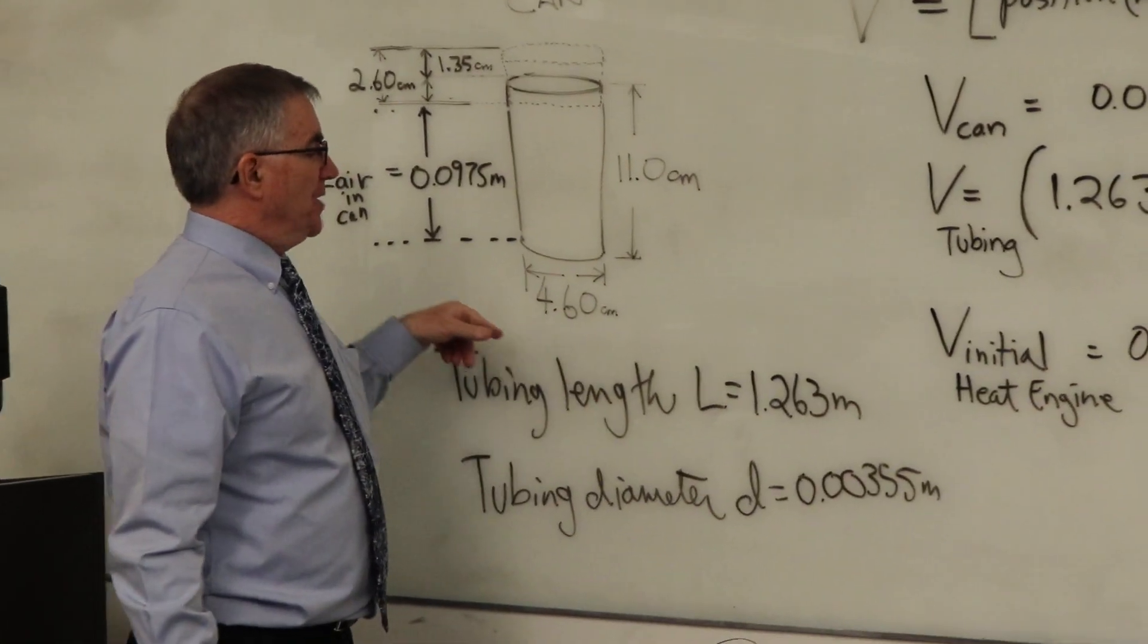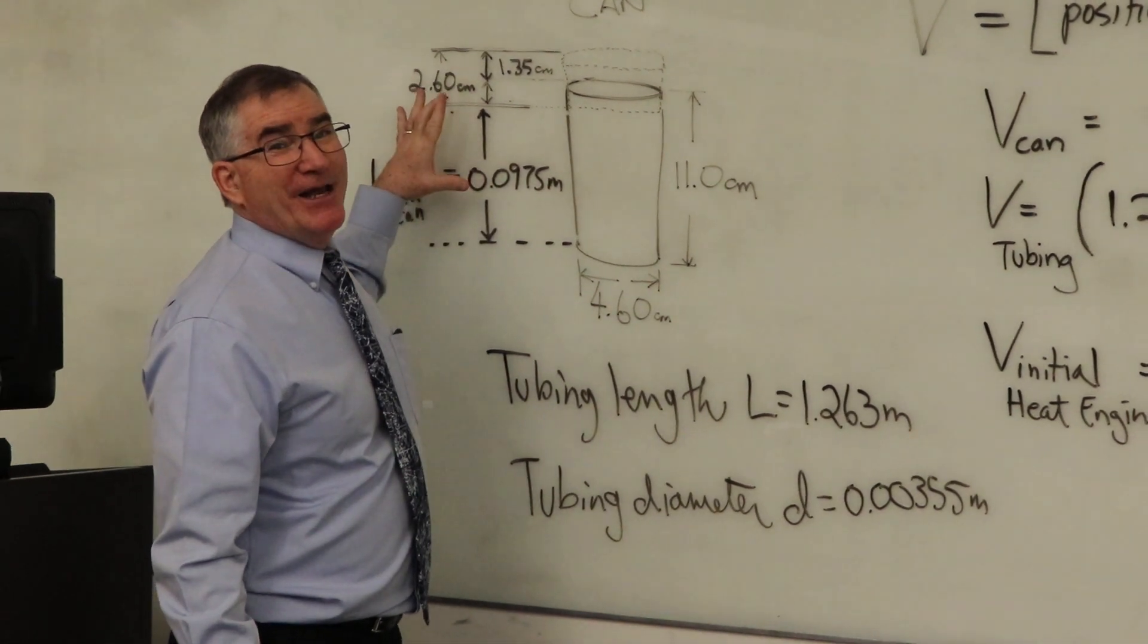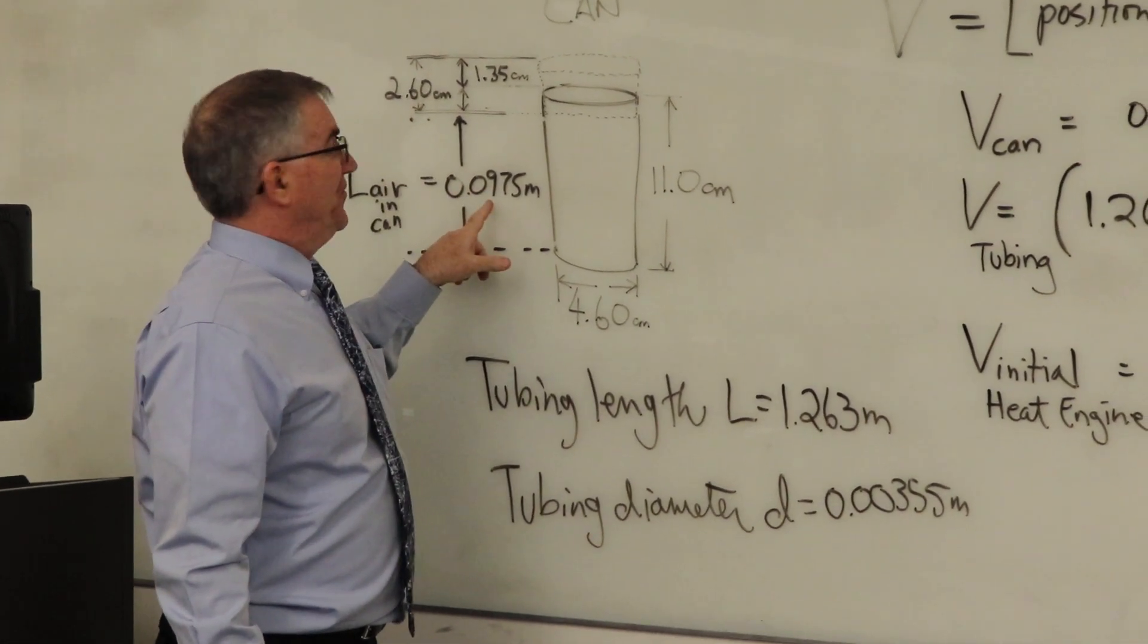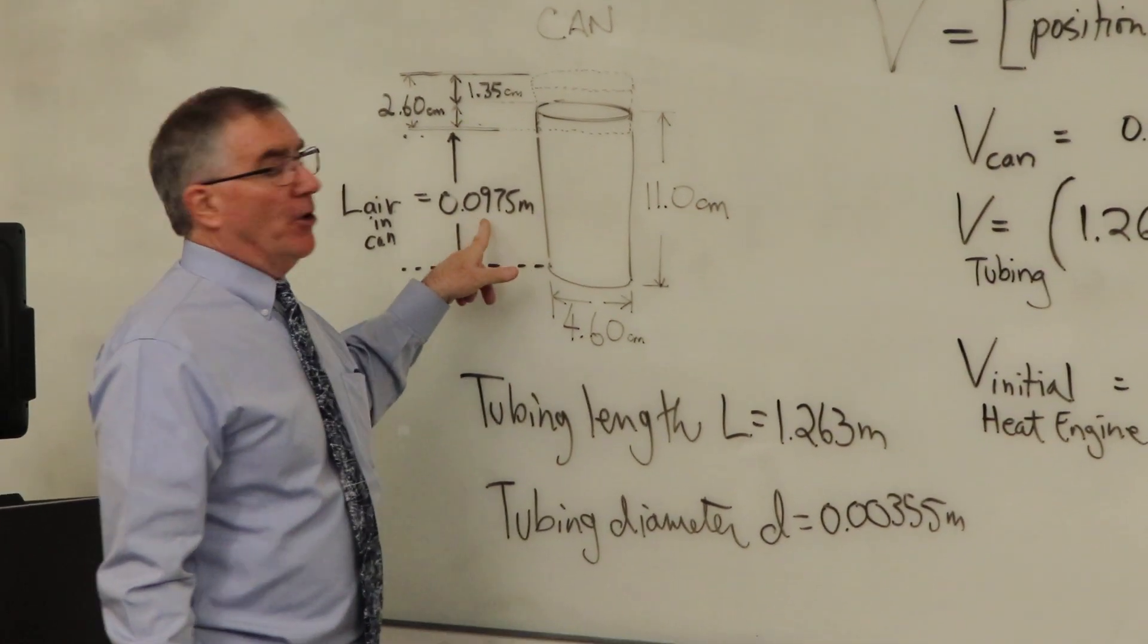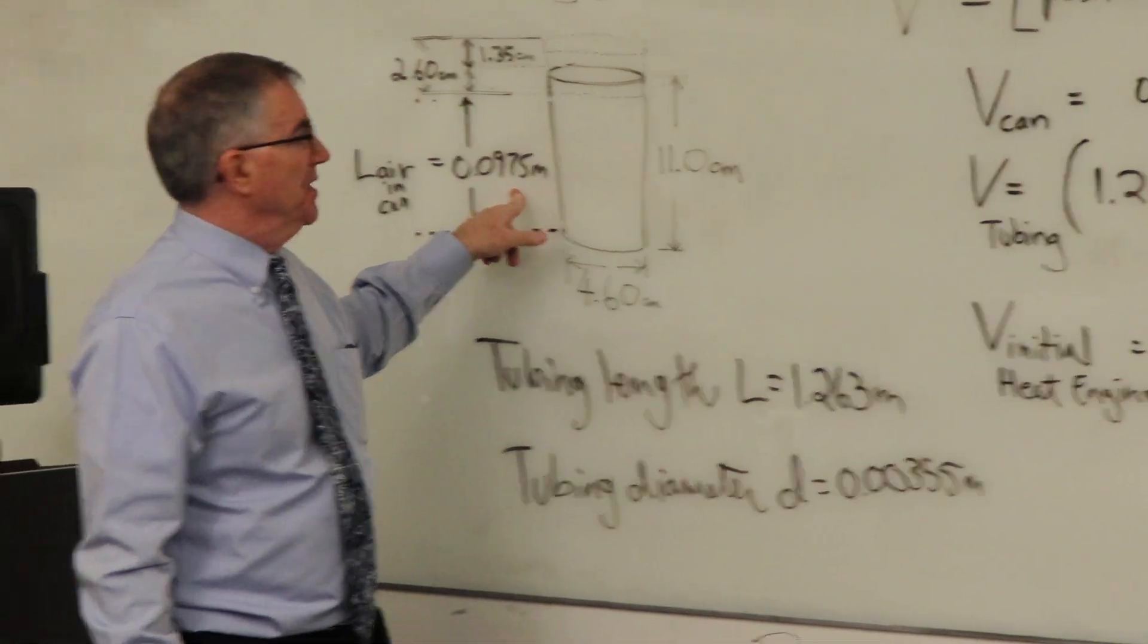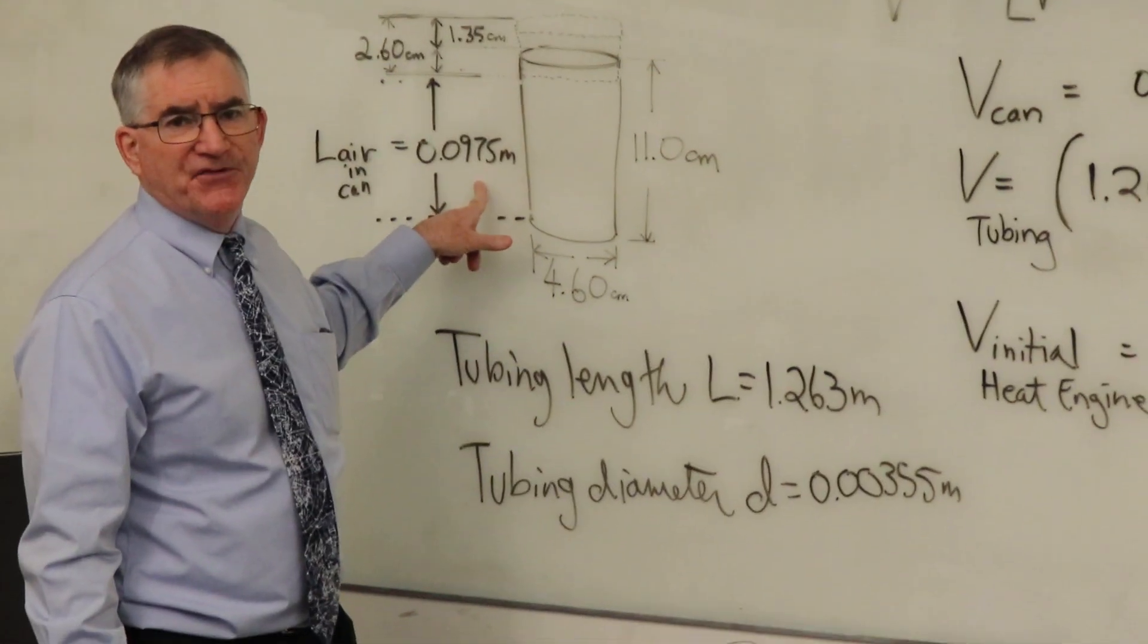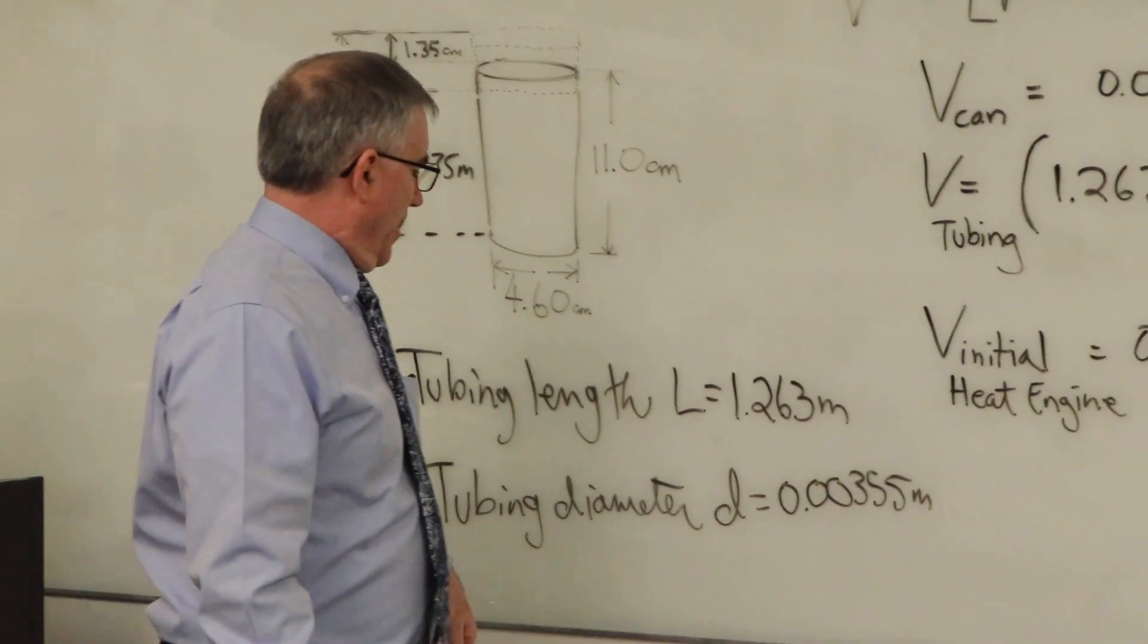And those measurements are right over here, so the diameter is 4.60 centimeters, and the length of the can that has air in it is 9.75 centimeters or 0.0975 meters. Everything needs to be in meters cubed, so you engineers aren't particularly fond of seeing decimals like this. We'll get through it.